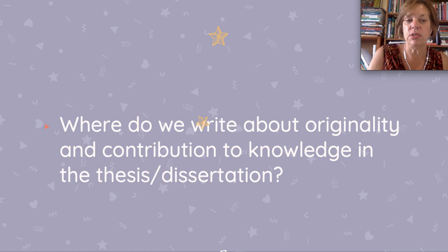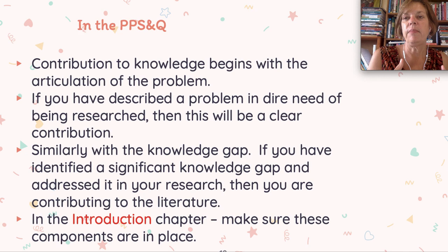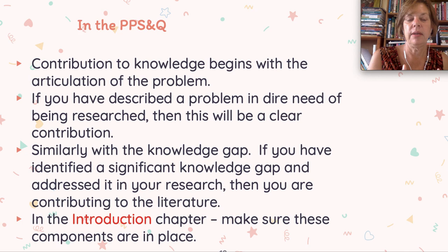So where do we write about originality and contribution to knowledge in the thesis? My argument is that you do this right from the beginning, when you articulate your problem, purpose statement, and questions. It begins with the articulation of the problem — the more you write that problem as being in dire need of being researched, the more you'll be able to say this was a worthwhile project. You have to describe the problem as something really worth researching, something we really need to know about, and if you can do that it's much easier later on to talk about the contribution.